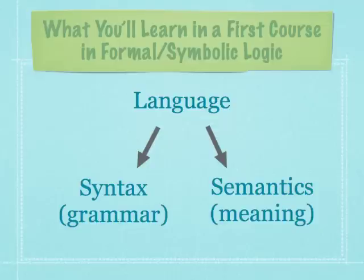One of the first things you do in a logic class is learn to rewrite statements and arguments in symbolic form so you can evaluate reasoning on a purely formal level. You learn that there's more than one system of logic — there are multiple systems, each capturing different aspects of the structure of natural language and argumentation.